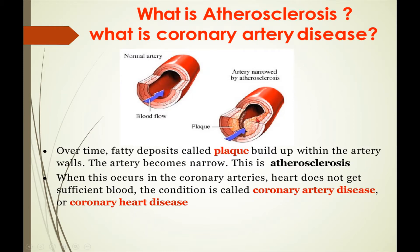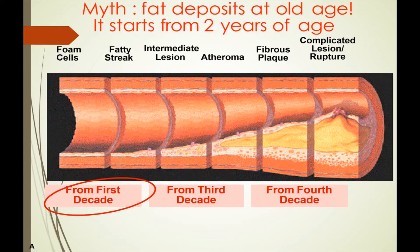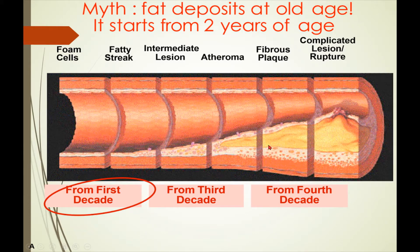Atherosclerosis does not start at old age — it begins from two years of age. From the first decade, foam cells are formed. From the third decade, fatty streaks form and intermediate lesions develop. By the fourth decade, around age 40, fibrous plaque is increasing and complicated lesions can rupture the arteries.